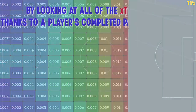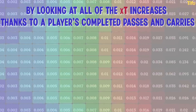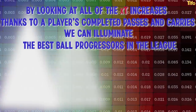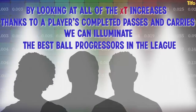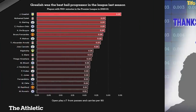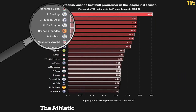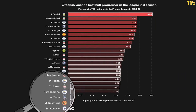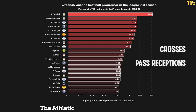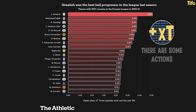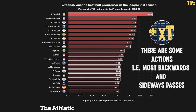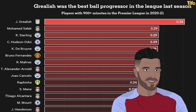By looking at all of the XT increases thanks to a player's completed passes and carries, we can illuminate the best ball progressers in the league — some of whom are predictable, but others perhaps a little more underrated or overlooked in their ability to move the ball forwards. This chart shows the XT per 90 that a player adds from their passes and carries in open play. Crosses and pass receptions are removed, and only the positive XT is taken into account, as some actions — most backwards and sideways passes — reduce a team's chances of scoring. Jack Grealish, by some distance, was the most threatening ball progressor in the league last season by this measure.